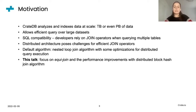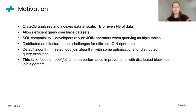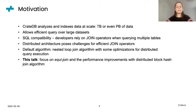The default algorithm we rely on for implementations of most join operators is the nested loop join algorithm. Of course, we add some further optimizations for distributed query execution. The focus of this talk is going to be on equijoin. This is one of the most commonly used types of joins in CrateDB, and I will show you how we improved its performance quite significantly with the algorithm called distributed block hash join algorithm.